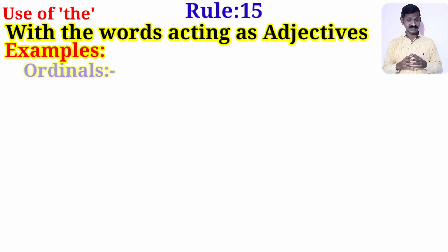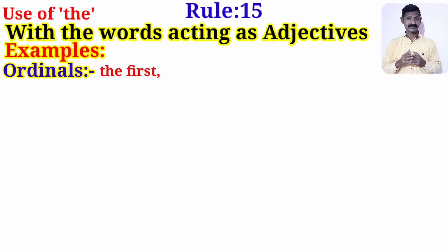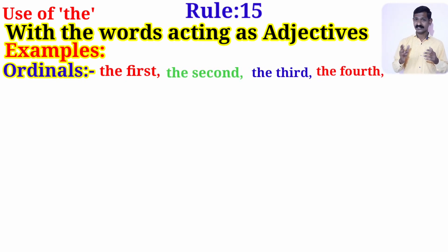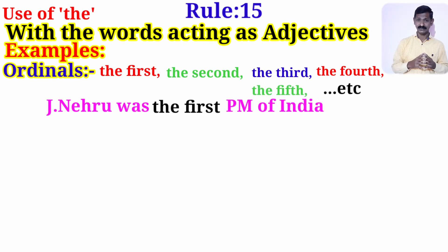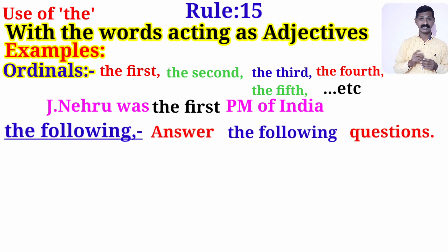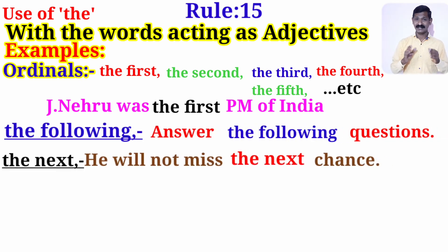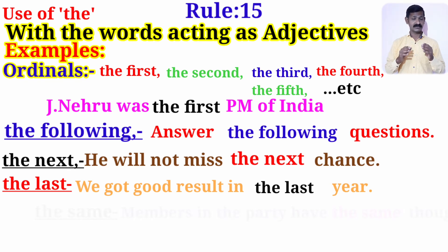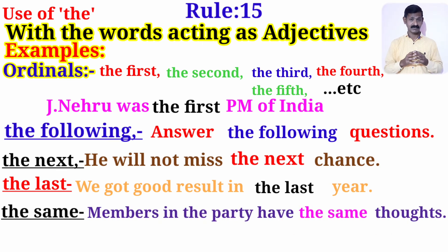We use article 'the' with words acting as adjectives — for example, ordinal numbers: the first, the second, the third, the fourth, the fifth, and so on. Similarly with words like: the following, the next, the last. Also with adjectives such as 'same' — the same — and 'only' — the only.